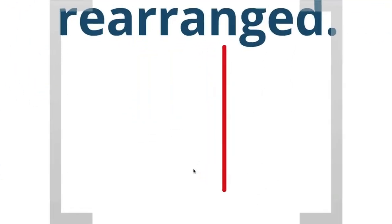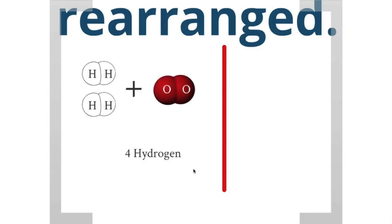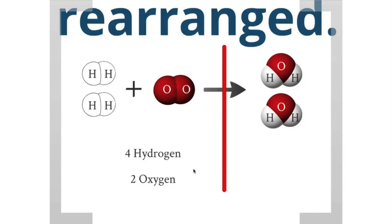Let's look at the chemical reaction where hydrogen and oxygen combine to form water. Now, we started with four hydrogen atoms, and when we add two oxygen atoms and let them react, that gives us two water molecules.